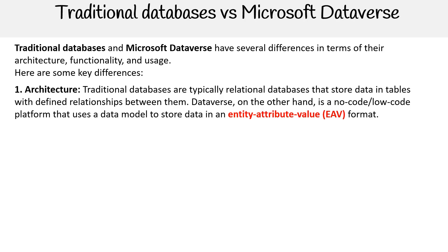In terms of architecture, traditional databases are typically relational databases that store data in tables with defined relationships between them. Dataverse, on the other hand, is a no-code, low-code platform that uses a data model to store data in an entity-attribute-value format.